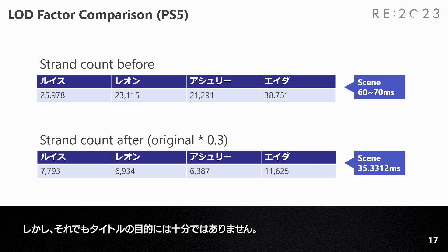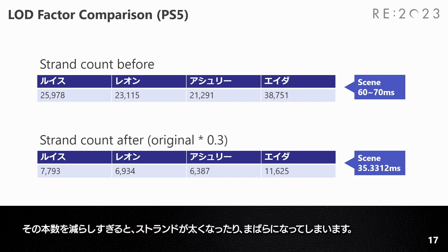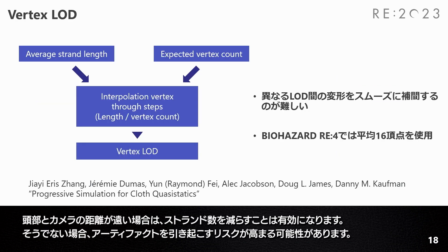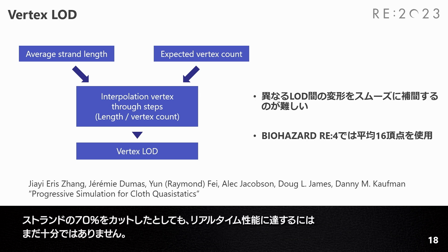But still, it's not good enough for the title's objective. We know that humans have about 100,000 hair strands. If the strand count is reduced too much, the strands will either become thinner or border spots will appear. So reducing the strand count could work if the head is far from the camera, but otherwise it raises the risk of causing artifacts. Even cutting 70% of the hair strands is still not enough to reach real-time performance.